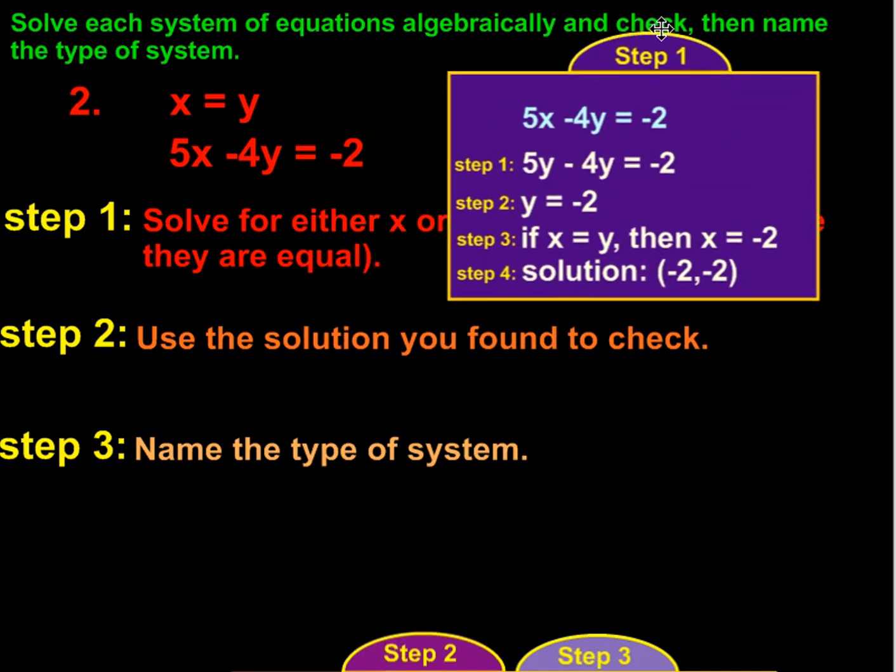So, let's go ahead and we'll start with the original equation, 5x minus 4y equals negative 2. For step number 1, we're going to alternate these. Since they're equal, I've chosen to go with y. So, we can change the x to a y and we have 5y minus 4y equals negative 2. And if we go ahead and subtract that, we get y equals negative 2. 5 minus 4 gives us 1. So, if y equals negative 2 and if x equals y, then x equals negative 2. So, the solution would be negative 2, negative 2.